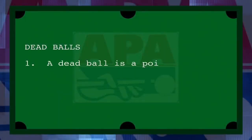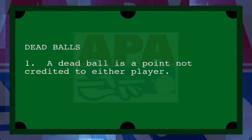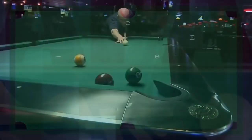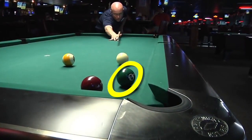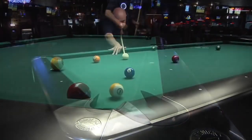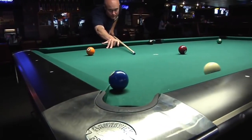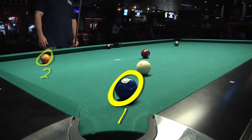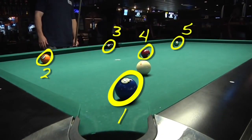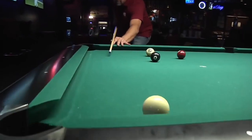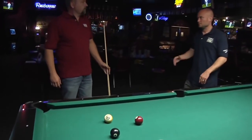A dead ball is a point not credited to either player. Dead balls are any balls made while scratching or fouling, and balls left on the table when the nine ball is made early, or when a player reaches their designated ball count to win the match.